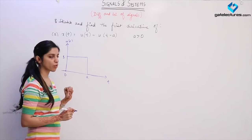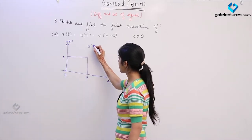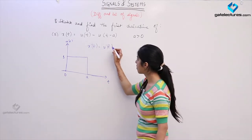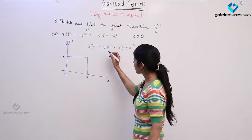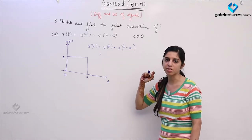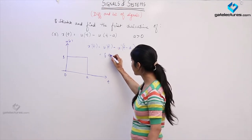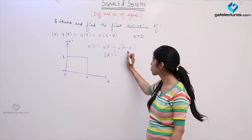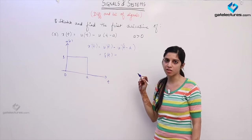So we are going to have a pulse on the positive side of the t axis. This is how x(t) is going to look like. Now when I try to differentiate this function, x'(t) is going to be u'(t) minus u'(t minus a). We know that differentiation of a unit step function is going to give us an impulse function.